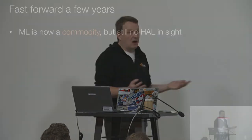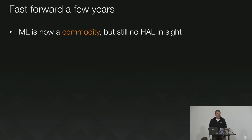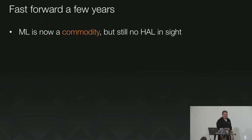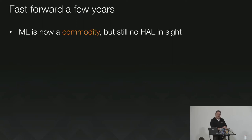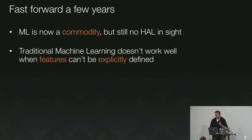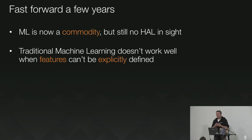Now machine learning is a commodity — we all have it on our resumes. Every company wants to do big data. But still, no strong AI in sight. Why? The problem is that traditional machine learning doesn't work when features cannot be explicitly defined.